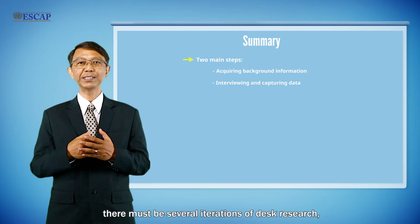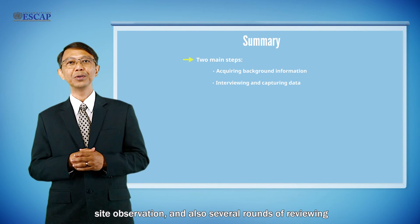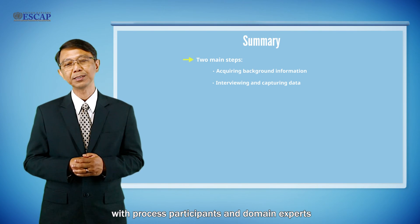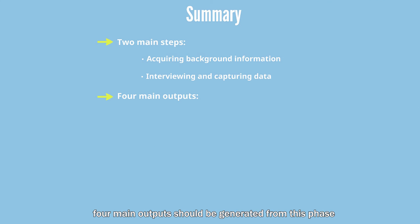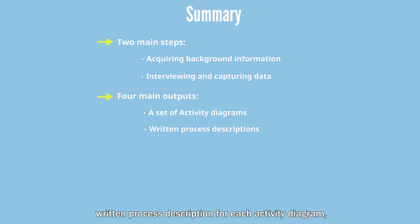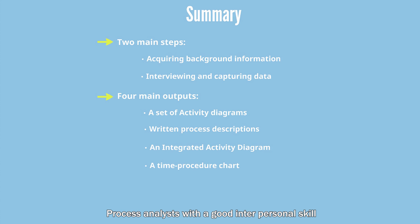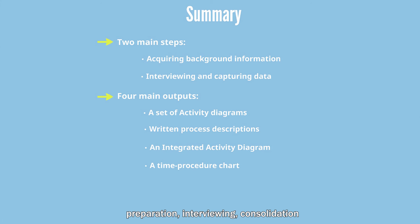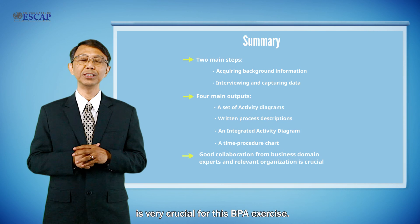Normally, there must be several iterations of research, population interviews, site observations, and several rounds of reviewing with process participants and domain experts for verification and validation of the findings. At least four main outputs should be generated from this phase: a set of activity diagrams, written process descriptions for each activity diagram, an integrated activity diagram, and a time procedure chart. Process analysts with good personal skills play a major role in conducting research preparation, interviewing, consolidation, modeling, and documenting the existing business processes. Good collaboration by business domain experts and relevant organizations is very crucial for this BPA exercise.